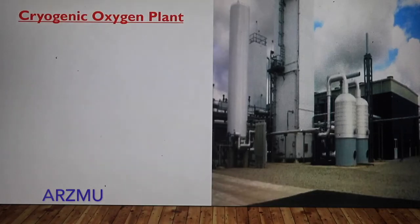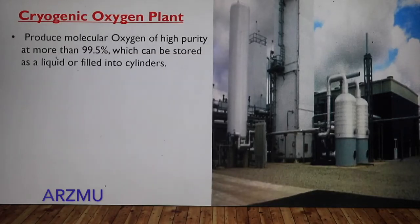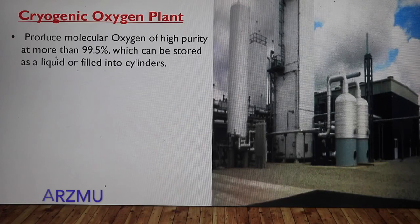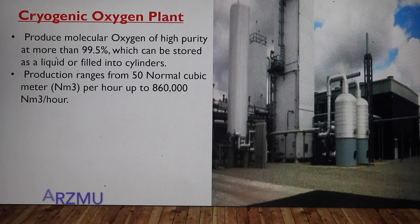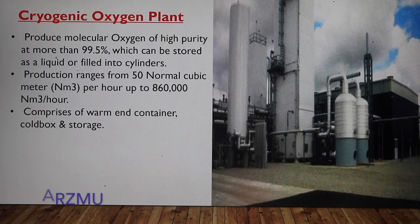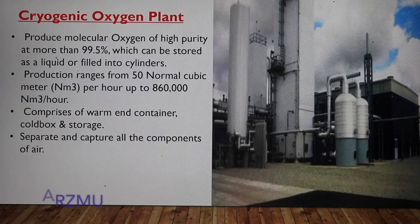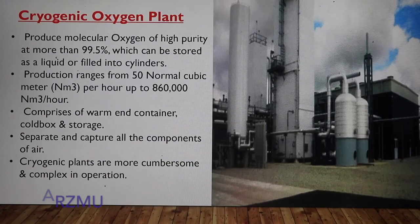Now a short description about a cryogenic oxygen plant. A cryogenic oxygen plant produces molecular oxygen of high purity at more than 99.5%, which can be stored as a liquid or filled into cylinders. The production of cryogenic plants ranges from 50 normal cubic meters per hour to 860,000 cubic meters per hour. The cryogenic oxygen plant consists of a warm end container, cold box, and storage. Cryogenic oxygen plants separate and capture all the components of air, but are more cumbersome and complex in operation.